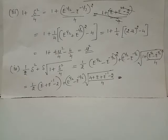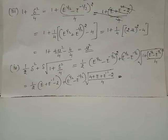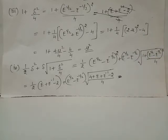The expression e plus e-inverse plus 2 can be considered as e plus e-inverse plus 2 times (e raised to 1/2 into e raised to negative 1/2). Also, e can be considered as (e raised to 1/2) whole square and e-inverse as (e raised to negative 1/2) whole square. Thus the numerator can be replaced by (e raised to 1/2 plus e raised to negative 1/2) the whole square.